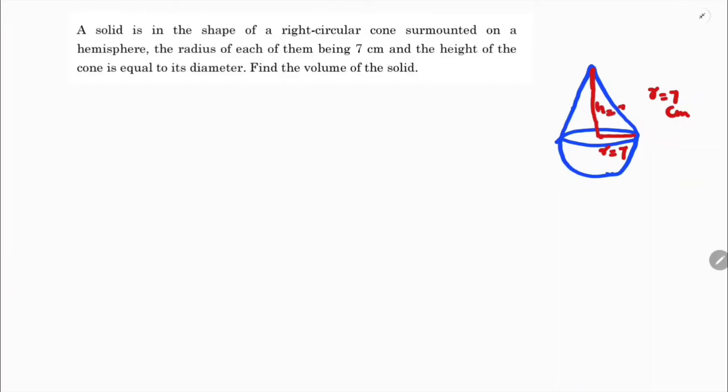Height of the cone is also 7 centimeters. Wait, height is equal to diameter. So if radius is 7, diameter is 14, so height is 14 centimeters because diameter is twice the radius. Now we need to find the volume of the solid.